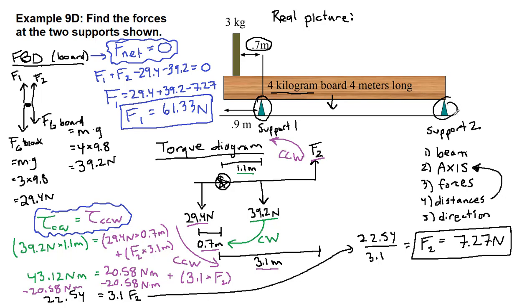So if we compare this setup to example 9a, it should make sense that this far support that is really just kind of partially holding up the board is really not pushing all that hard, only 7 or 8 newtons.